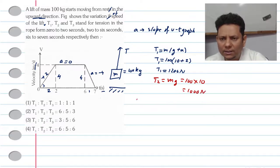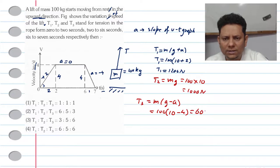Third case, where your acceleration is negative, tension T3 will be equal to mg minus a, or plus a where a already has negative value. So this will be equal to 100 multiplied by 10 minus 4, so this will be equal to 600 newtons.